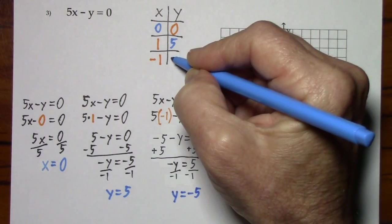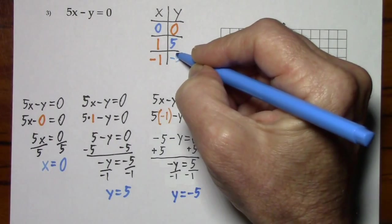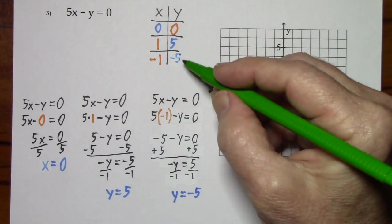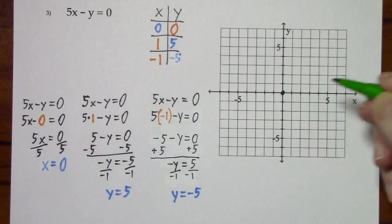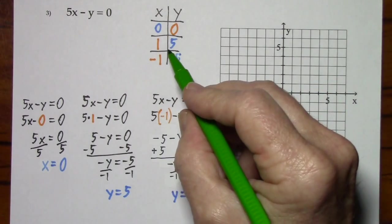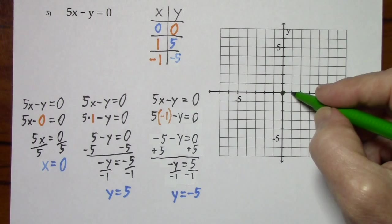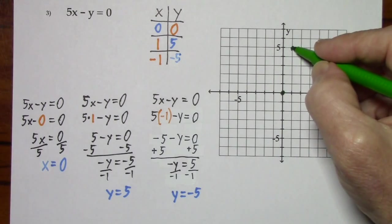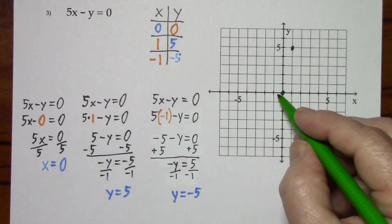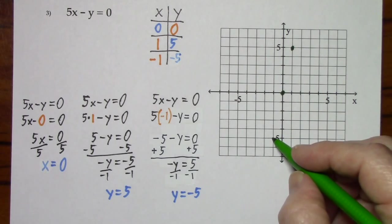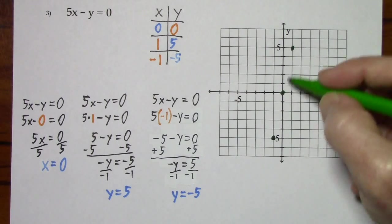So, we put a negative 5 in our chart. Now we have three ordered pairs, 0, 0 or the origin, 1, 5 over 1, up 5. Negative 1, negative 5, back 1, down 5. We can draw our line.